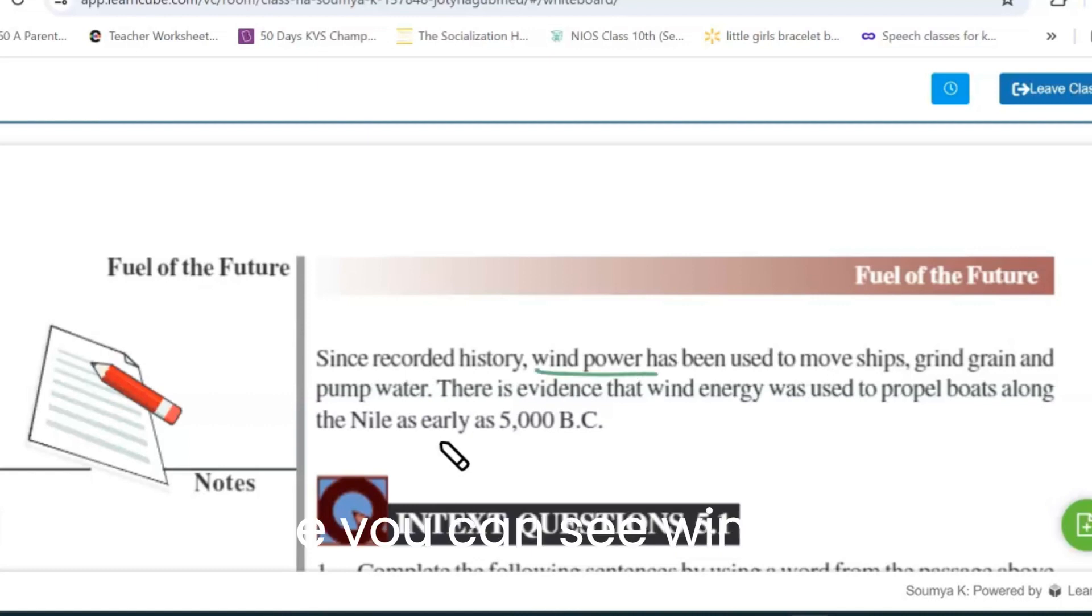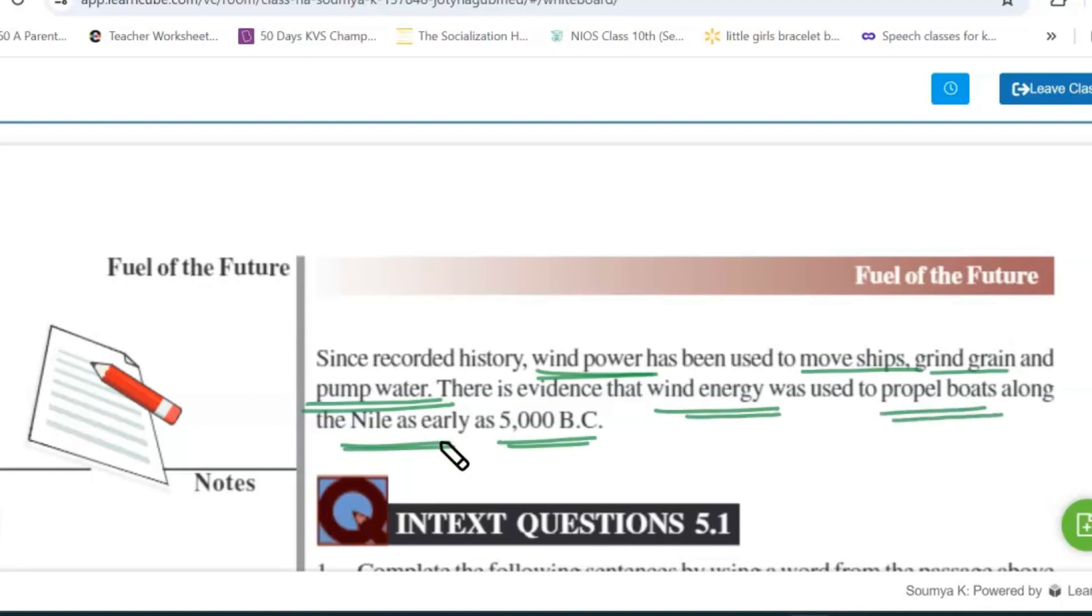So here you can see wind power usages are given: to move ship, grind grain, and to pump water. Also it says the wind energy was used to move the boats or propel the boats along the Nile River during very olden time of 5000 BC. So this is what being told in the paragraph.